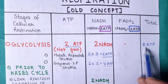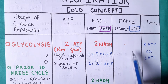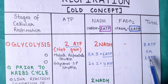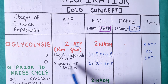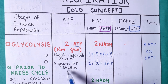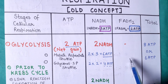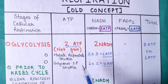So the net gain from glycolysis is either 8 ATP or 6 ATP, depending on which shuttle system the cell is using — glycerol-3-phosphate shuttle or malate-aspartate shuttle, respectively.